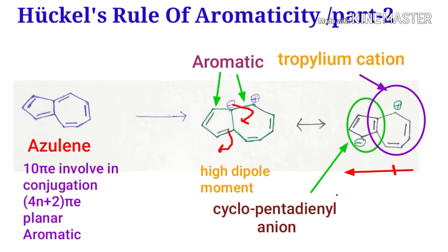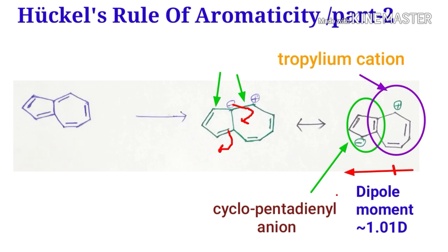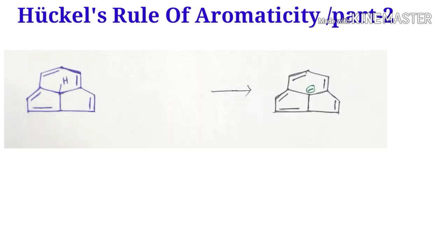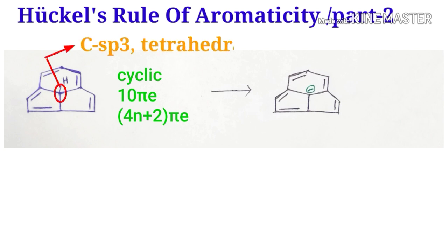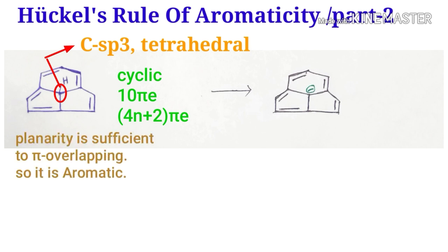These two structures show a very high dipole moment. Now I go to a higher system — it is cyclic and there are 10 pi electrons. It is a multiple of 4n plus 2. This carbon is an sp3 carbon, so it is tetrahedral, but here the planarity is sufficient for pi overlapping.